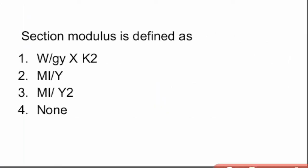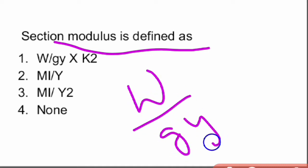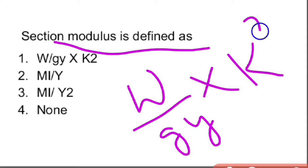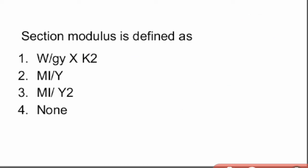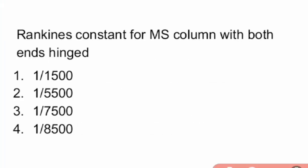Next question: section modulus is defined as what? From the given options, section modulus is defined as w/(g·y·k²), where w is the load, g is gravity, y is the deflection, and k is the radius of gyration.